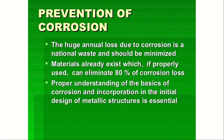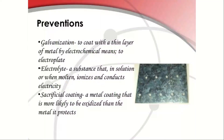For every problem there is a solution, so we have to look at prevention of corrosion. The huge annual loss due to corrosion is a national waste and should be minimized. Materials already exist which, if properly used, can eliminate 80% of corrosion loss. Proper understanding of the basics of corrosion and incorporation in the initial design of metallic structures is essential. Methods of prevention: first, galvanization — coating with a thin layer of metal by electrochemical means to electroplate. Second, electrolyte — a substance that in solution or when molten ionizes and conducts electricity. Third, sacrificial coating — a metal coating that is more likely to be oxidized than the metal it protects.